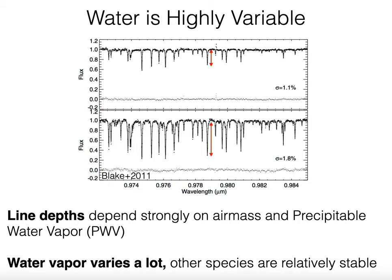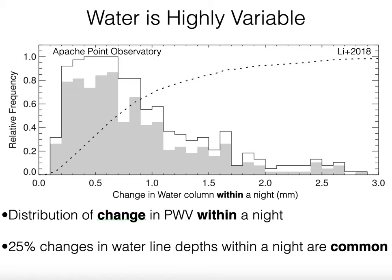The strength of these water lines depends on air mass, because that determines how much atmosphere you're looking through, but also on what we call precipitable water vapor, which is measured in millimeters. This plot shows the distribution of change in the water column at Apache Point Observatory within one night. It's very common for the amount of water vapor to change by a millimeter or so within a single night.